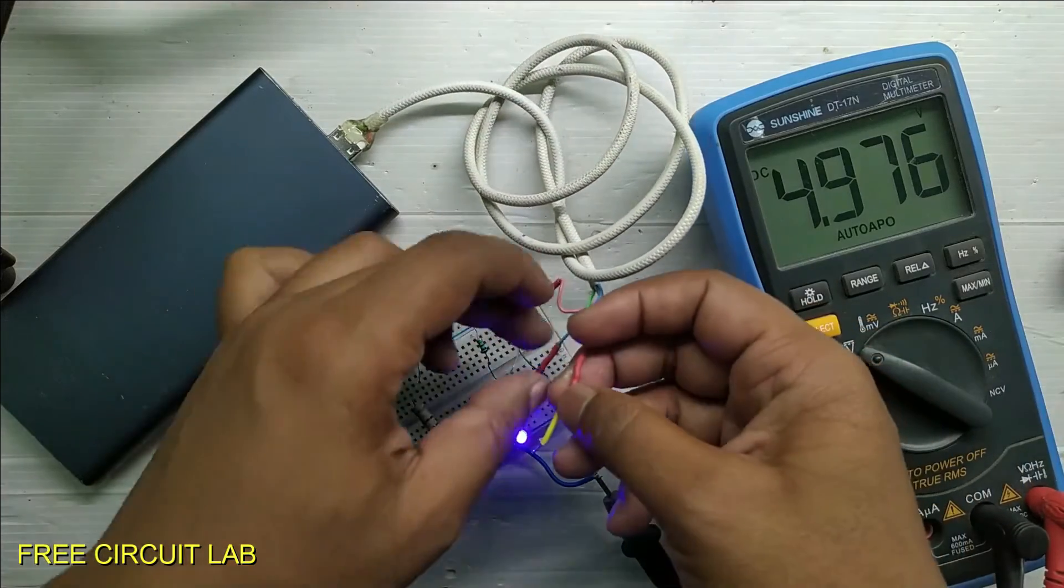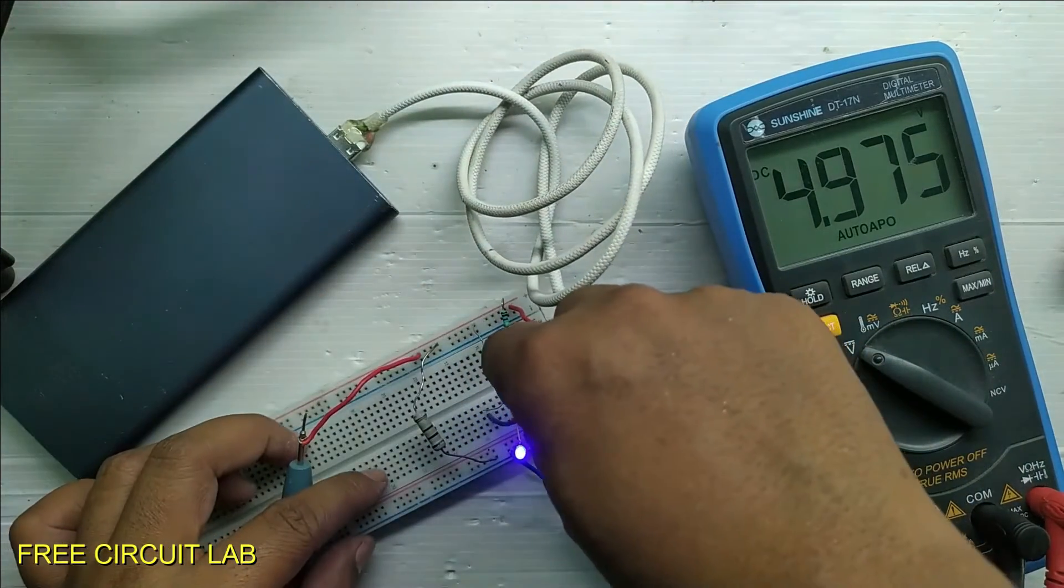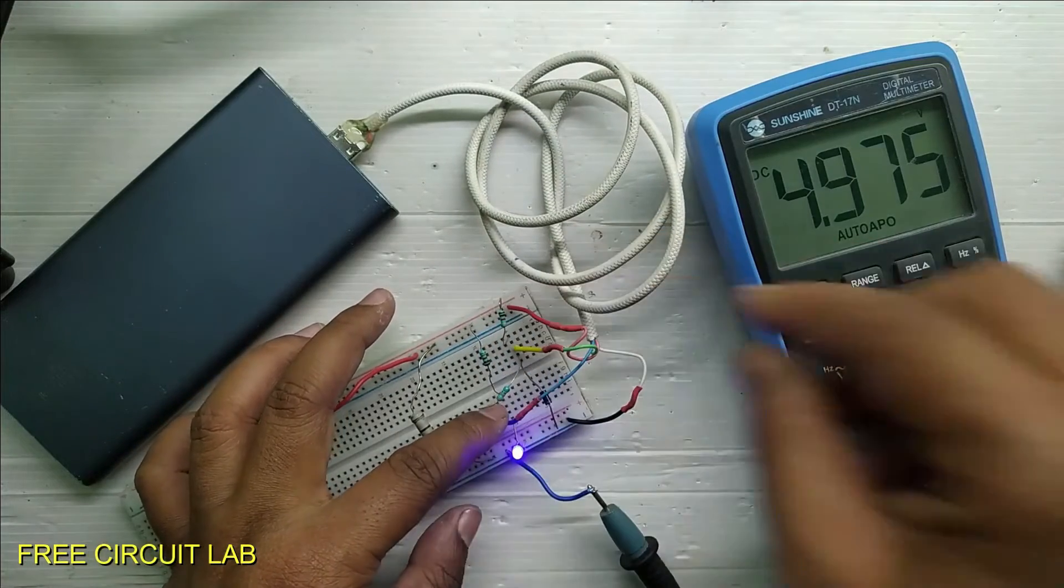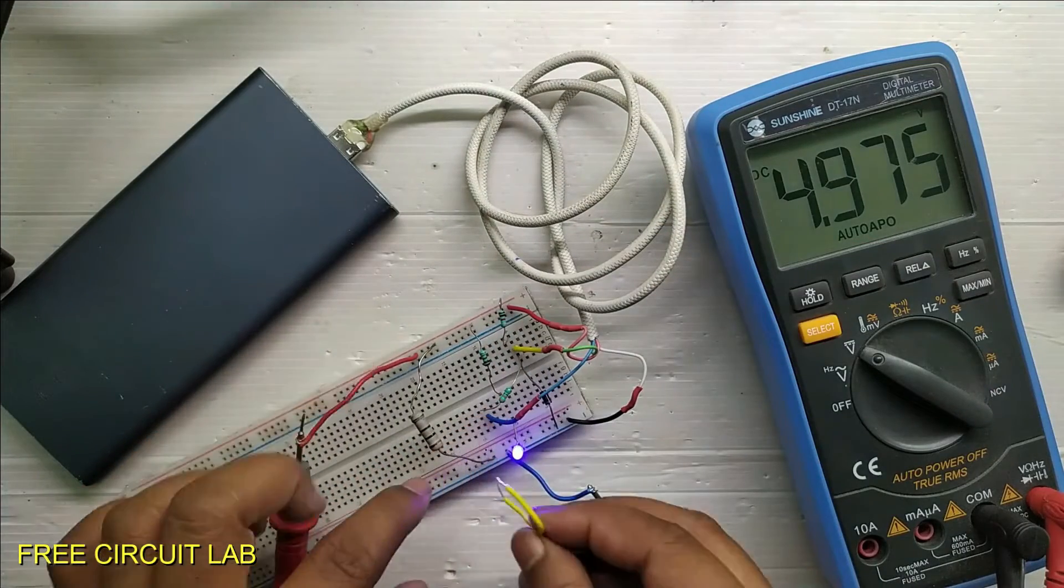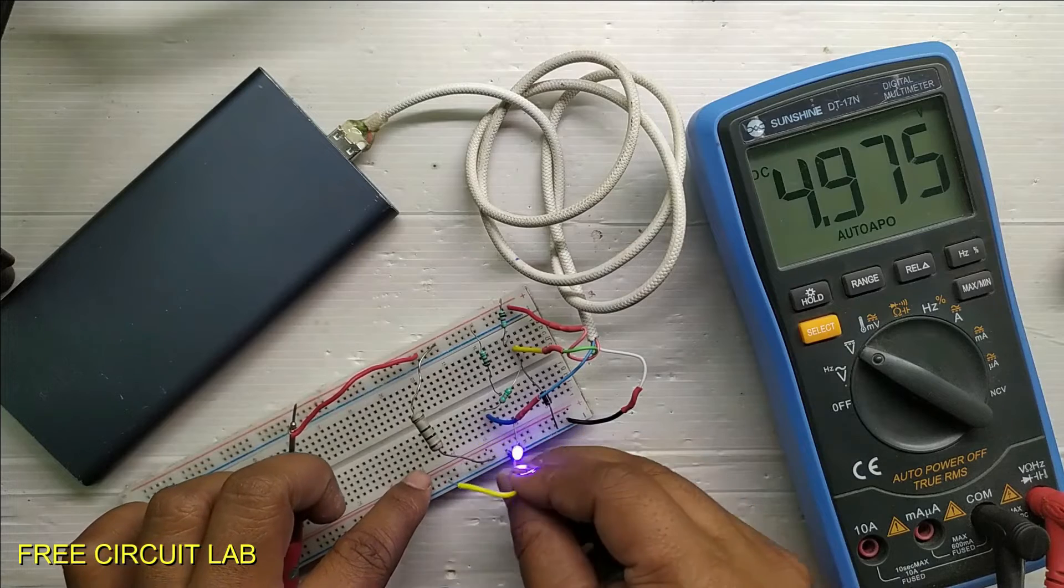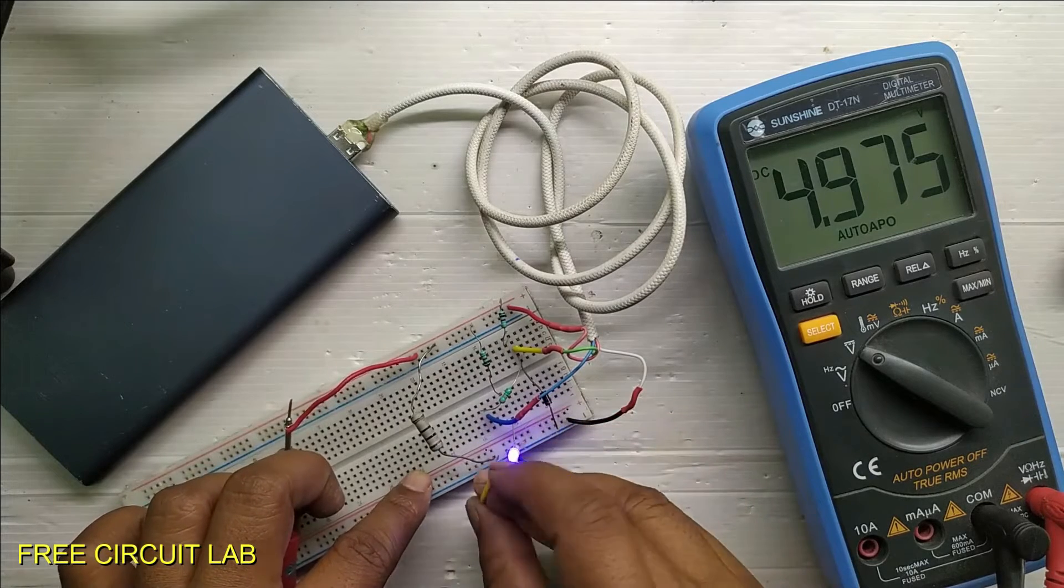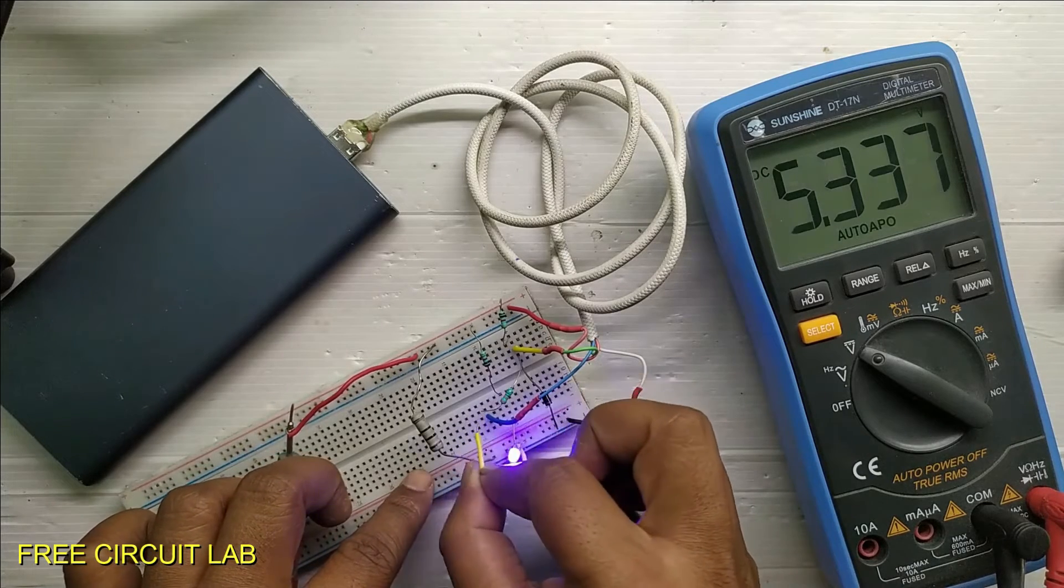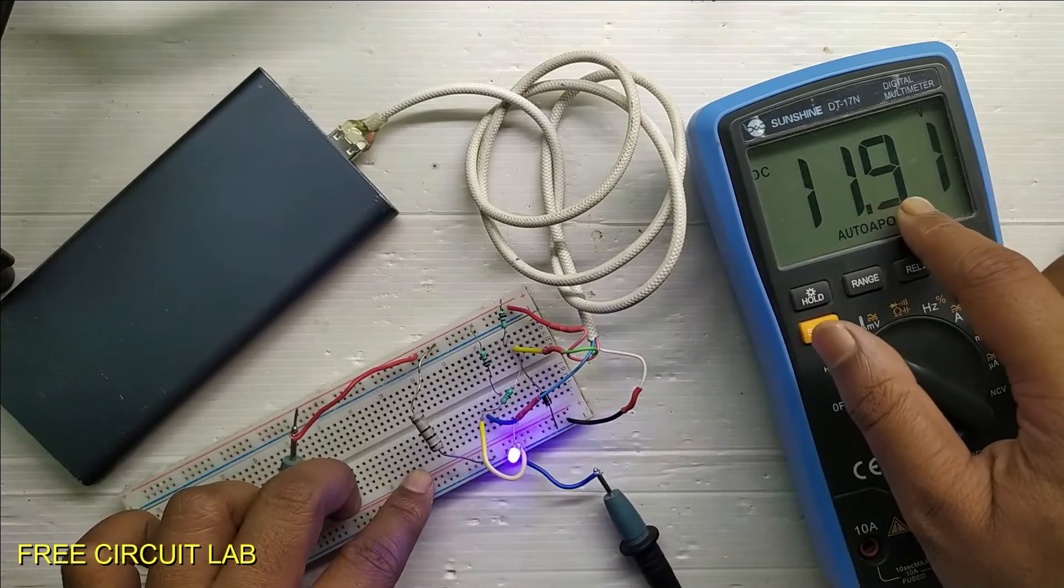I will connect 0.6V to D minus via a series resistor and I will use a normal push button to pull D minus to ground. I have connected a 330 ohm series resistance and will use the yellow wire to pull the D minus to ground. And as you can see it works fine.